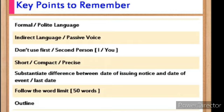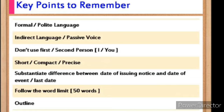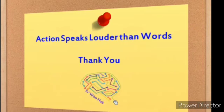It should be short and sweet. Make sure there is a substantive difference between the date of issuing the notice and the date of the event. Follow the word limit of 50 words. And very importantly, there should be an outline — without an outline, you should not write the notice. While writing, first draw a rectangular box as the outline, and at the top center of the box write 'Notice.' Thank you, girls.